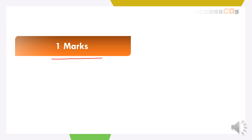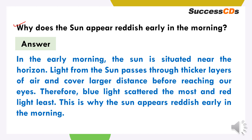The next question is: why does the sun appear reddish early in the morning? It appears red in the morning because the sun is near the horizon at that time. Jab light sun se pass karti hai thick layers of air pe, toh ek larger distance cover karne ke baad wo hamari eyes ko reach kar paati hai. Therefore, the blue light which is scattered the most and red light which is scattered the least — due to this reason, the sun appears reddish early in the morning.